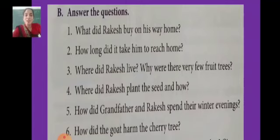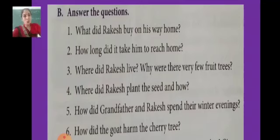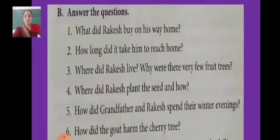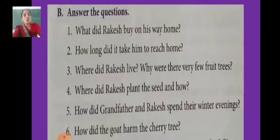Question number 5: How did grandfather and Rakesh spend their winter evenings? Grandfather and Rakesh sat around a charcoal fire in the cold winter evenings. Grandfather told Rakesh various stories — some about ghosts that lived in trees, some about people who turned into animals, and others about beings that jumped. Rakesh in turn would read the newspaper to grandfather since grandfather's eyesight was weak.